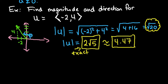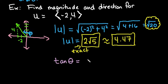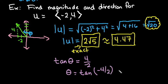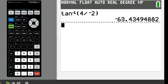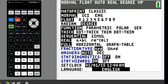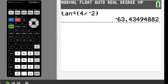Now let's find the reference angle. We'll set it up using our relationship: tangent of theta equals b over a, so we put 4 over negative 2. We're going to plug this into our calculator — make sure that you are in degree mode and not radian mode. I do the inverse tangent of 4 divided by negative 2, and notice that it gives me negative 63.43 degrees.